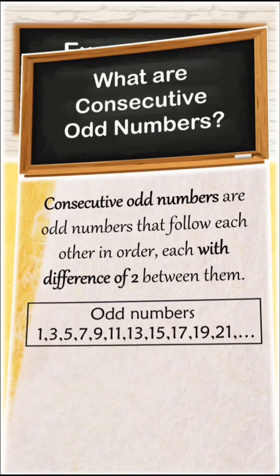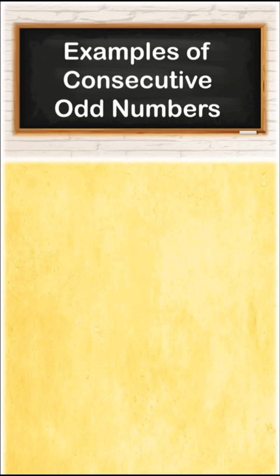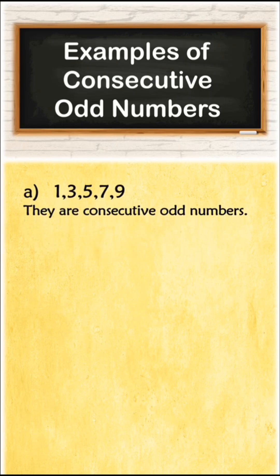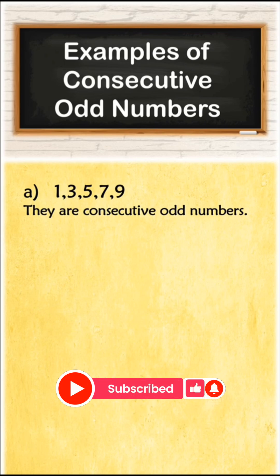Now let us see some examples. If you observe here, 1, 3, 5, 7, 9. Yes, they are consecutive odd numbers because they maintain the same sequence and the difference between the numbers is 2 without skipping any number in between.